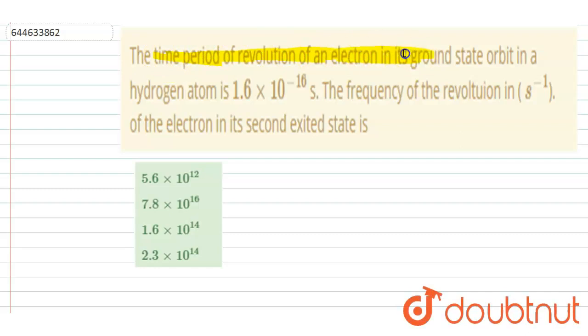You have to find out the frequency of revolution of the electron in second excited state. So this is the time period in ground state and we want the frequency in second excited state.